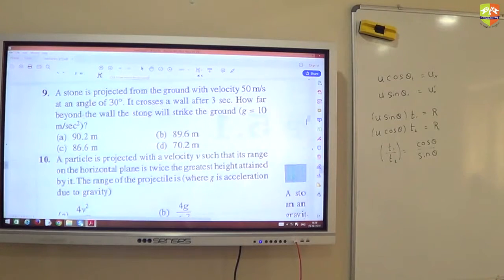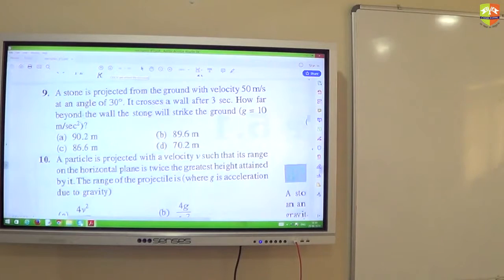Okay, solve 9th question. You have 2 to 3 minutes. Start doing it. So if I know total distance traveled by the stone and if I know in 3 seconds, I will subtract it. You should get the range and from the range you should subtract the distance it travels in 3 seconds. So this is all at the ground level.